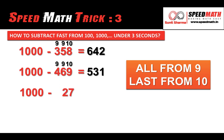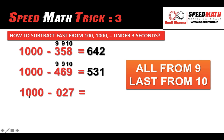Let's say if you want to subtract 27 from thousand. Observe: the number of zeros is 3 but the number of digits is 2. Since the number of zeros should equal the number of digits, we add a zero before that number to make it 027. Now we have three zeros and three digits. Methodology is the same: 9 minus 0 is 9, 9 minus 2 is 7, 10 minus 7 is 3. The answer is 973.